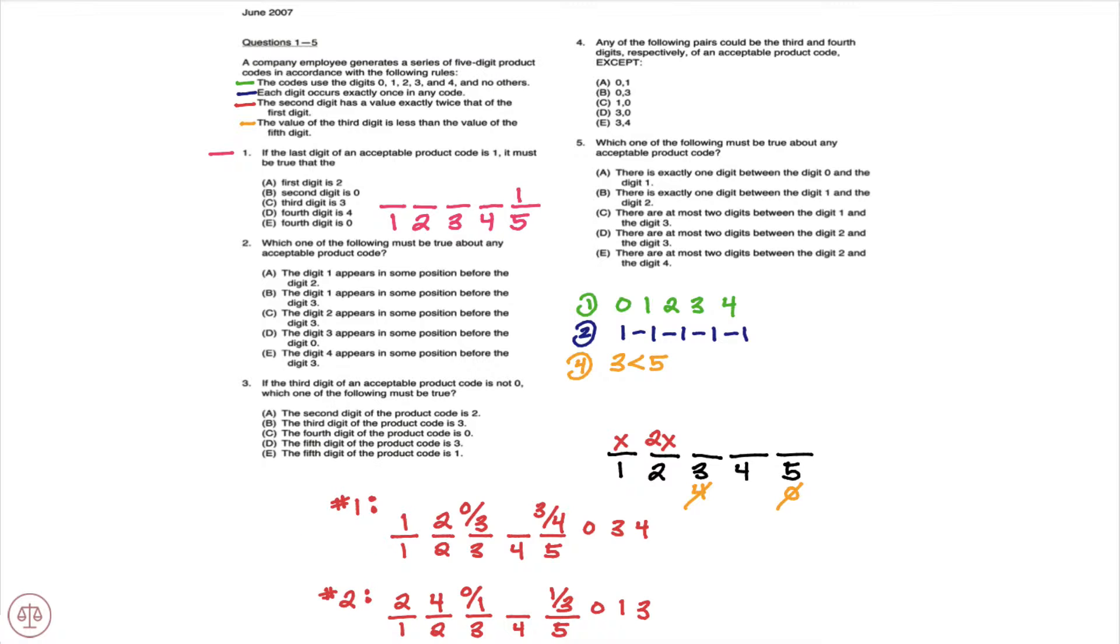So since we're in scenario 2, we know that 2 is going to be first, 4 is going to be second because it's exactly twice the first value or the first digit.